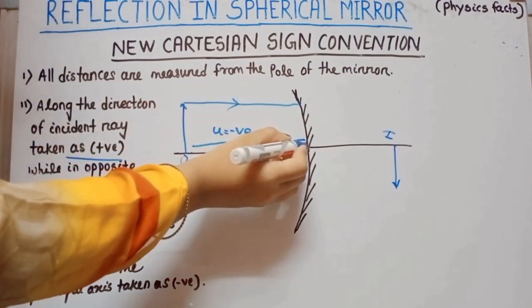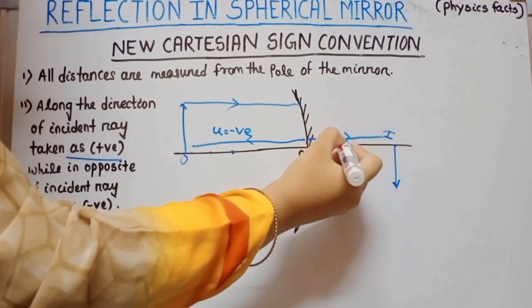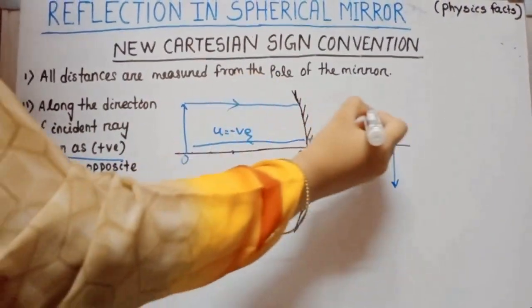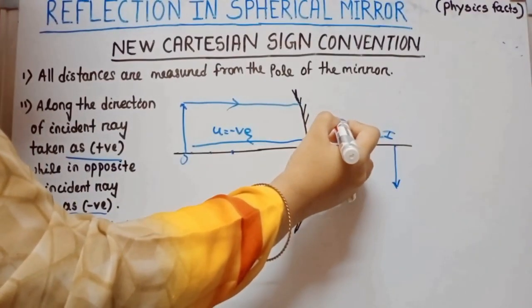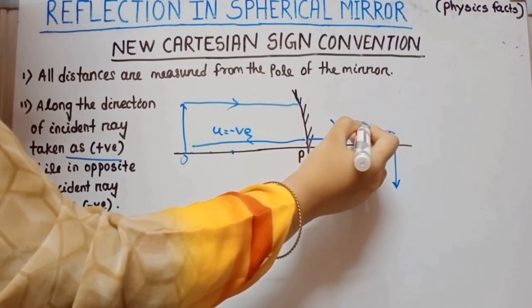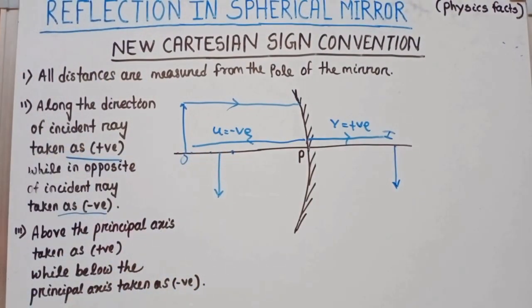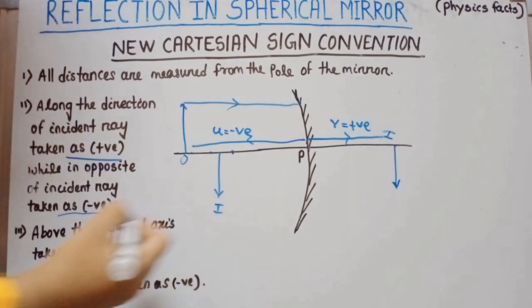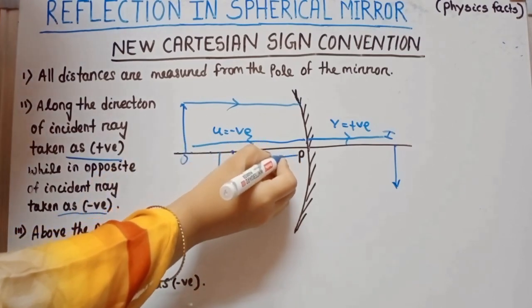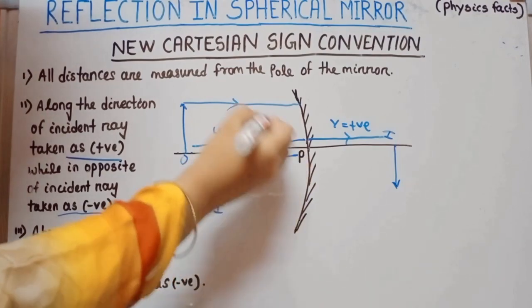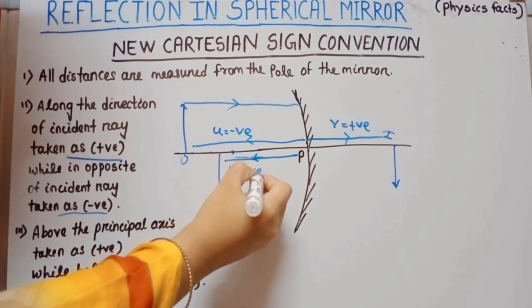Whereas when we measure the image distance — from pole to image — if that distance is along the direction of the incident ray, the image distance is taken as positive. However, if the image is produced on the other side, that measurement from pole to image is in the opposite direction of the incident ray, so that image distance is taken as negative.